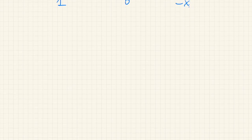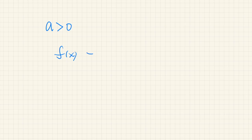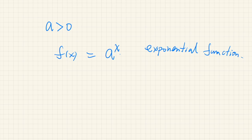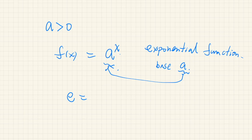Next we move on to exponential functions. Suppose a is a positive real number; then f(x) = a^x is called an exponential function with base a. When we say 'the exponential function,' the base is e — Napier's constant (≈2.718...) — so e^x is the exponential function.